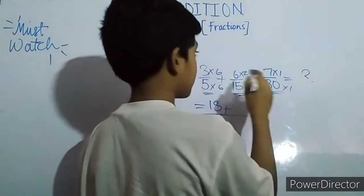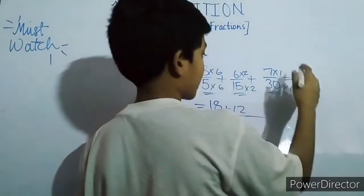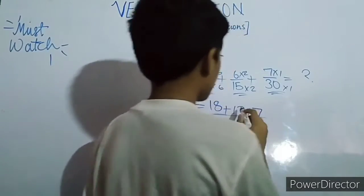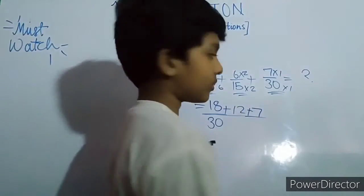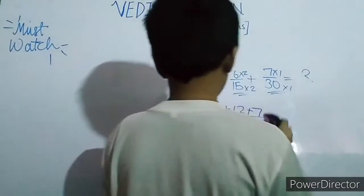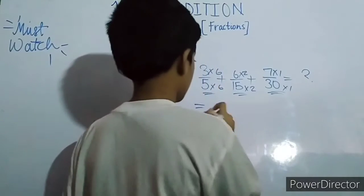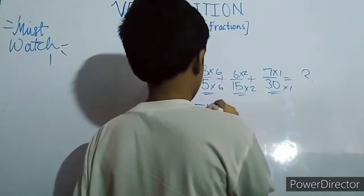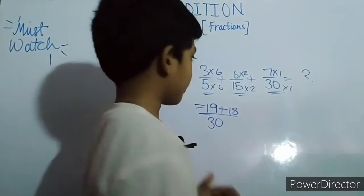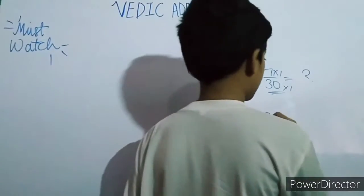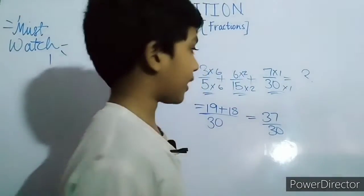The answer you get is eighteen by thirty, plus six into two which is twelve by thirty, plus seven into one which is seven. Twelve plus seven is nineteen, nineteen plus eighteen — which is thirty seven. So the answer is thirty seven by thirty.